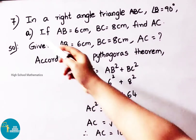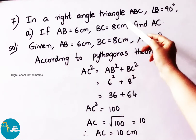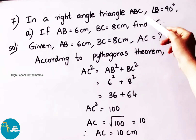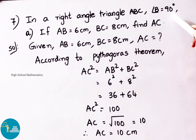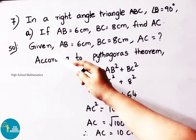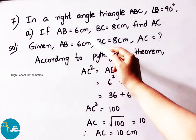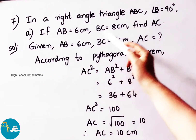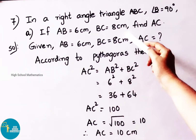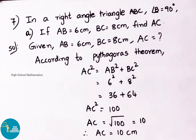See now question number 7. In a right angle triangle ABC, angle B equals to 90 degrees. If AB equals to 6 centimeter and BC equals to 8 centimeter, find AC. Let us see the solution.